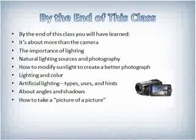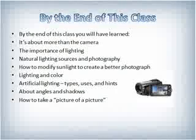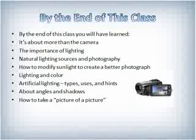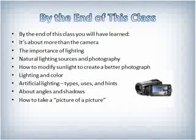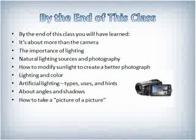By the end of this class, you will have learned that it's about more than just the camera. You will learn the importance of lighting, including natural lighting sources and how that affects your photography, and you will learn how to modify sunlight to create a better photograph. You will also learn about lighting and color. You'll learn about artificial lighting — the types, the uses, and hints about using artificial lighting. You will also learn about angles and shadows.